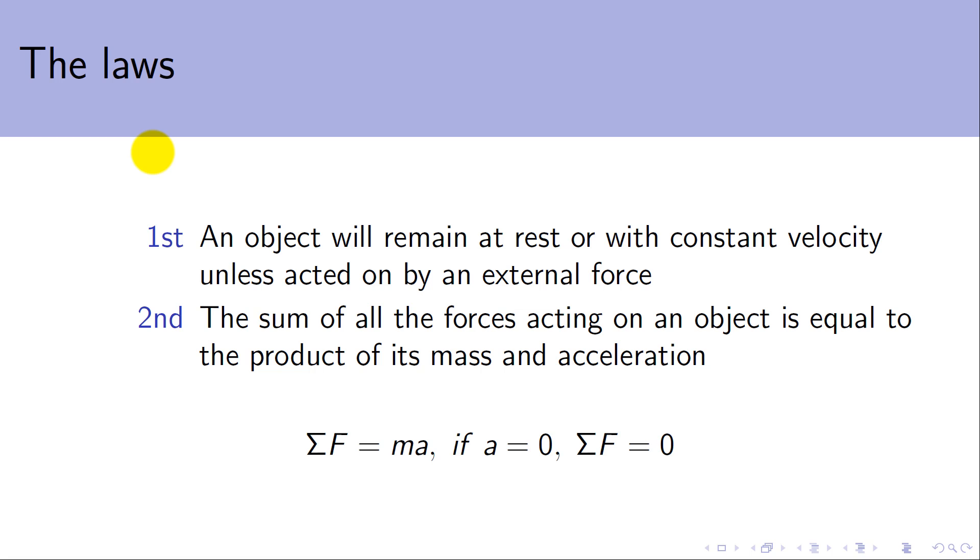The second law then tells us exactly how we work out how much that object is going to accelerate. It tells us that it depends on the mass. When we add up all of the forces acting on an object, we'll get some net force and that is going to be equal to the product of its mass and acceleration. Sometimes this is also written as being the net force being equal to the rate of change of momentum.